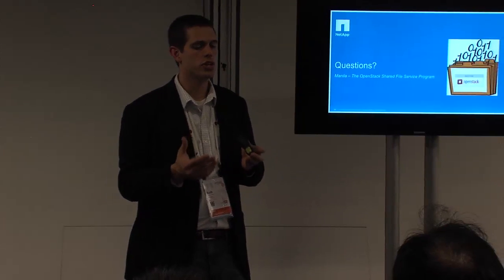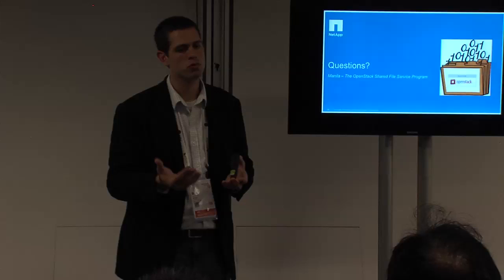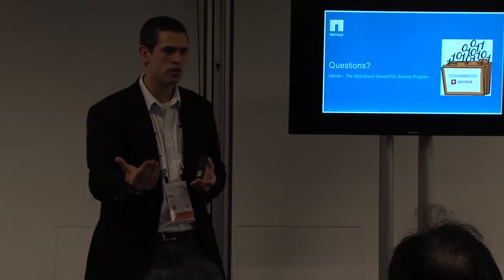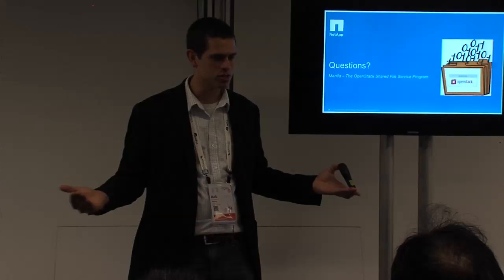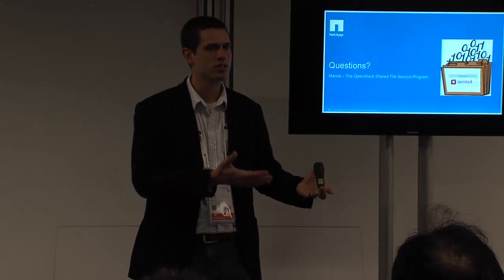For a Share Network there's a one-to-one association for a given Neutron network and Neutron subnet to a Share Network. I can create as many shares as I want on that Share Network, but what that does is allows us to know, when we call out to Neutron and ask for an IP address for the share, what subnet it needs to exist on and what segment effectively from a layer-two perspective.